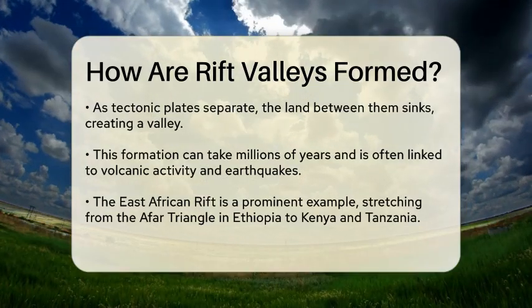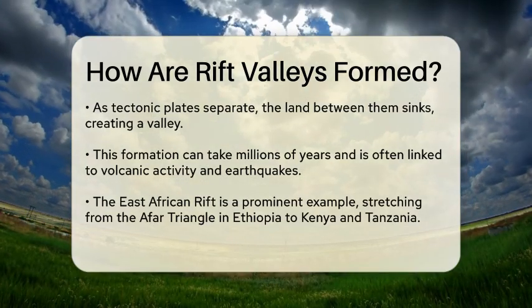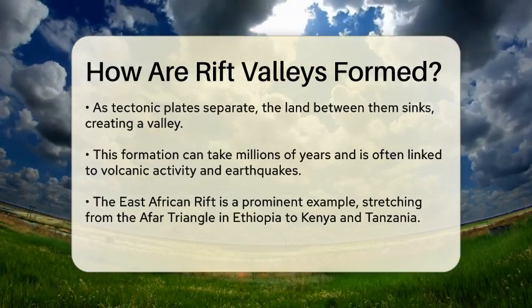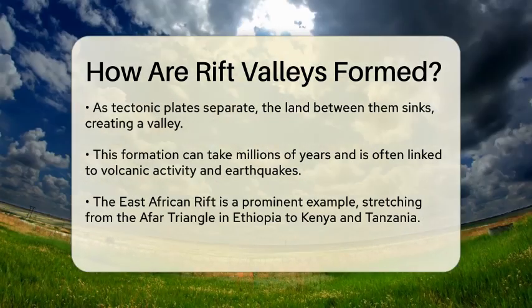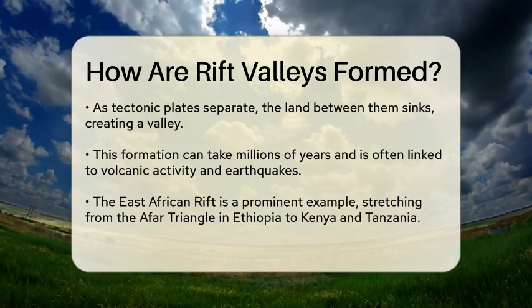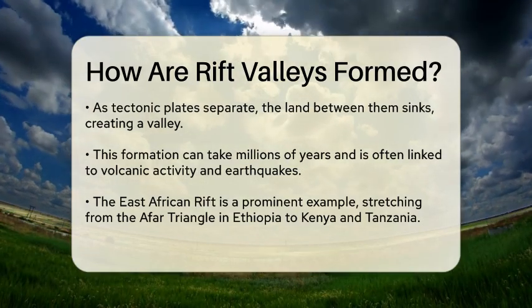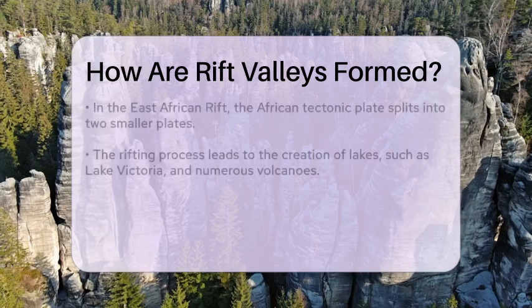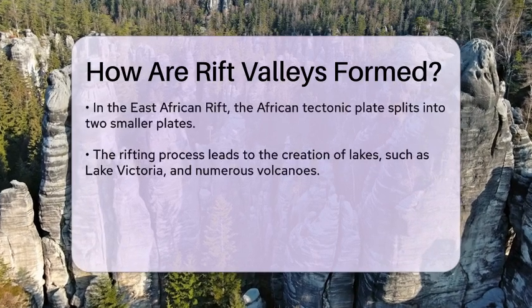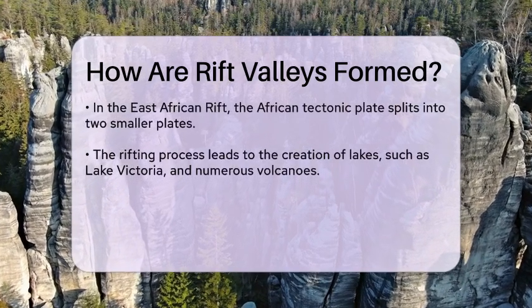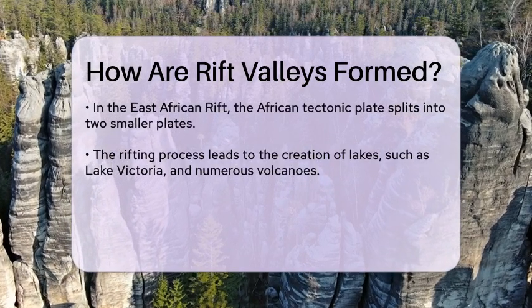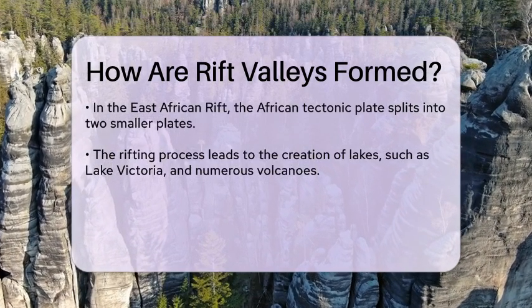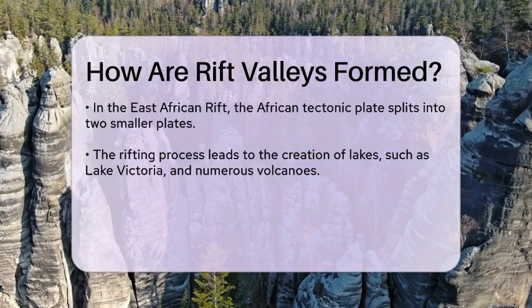This process can take millions of years and is often accompanied by volcanic activity and earthquakes. One of the most well-known examples of a rift valley is the East African Rift, which stretches from the Afar Triangle in Ethiopia down through Kenya and Tanzania. Here, the African tectonic plate is splitting into two smaller plates, leading to the formation of lakes such as Lake Victoria and numerous volcanoes.